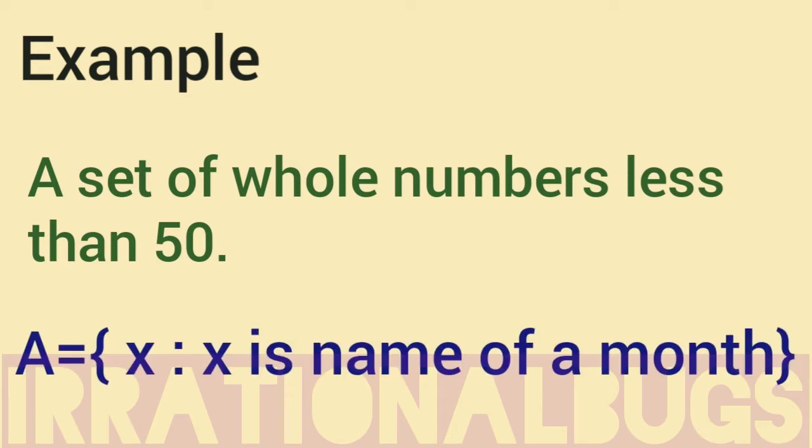Second example, a set A is equal to X such that X is name of a month. We know that 12 months are there, so we will have 12 elements in this set. Again, countable is 12, so finite.